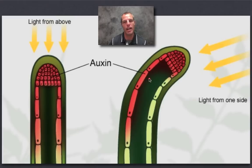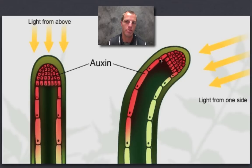Auxin moves to the dark side, elongating those cells, and in doing so it bends the plant towards the light. So that's plant responses — how do plants respond to a stimulus? We call them tropisms: just turning towards or away from a stimulus. I'm Coach Boyston, hopefully that was helpful — have a good day!